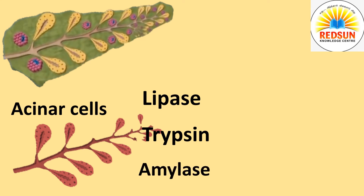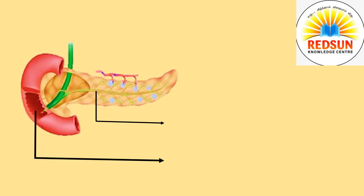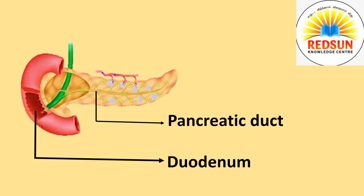Pancreatic amylase digests starch, trypsin digests protein and lipase digests fat. Pancreatic juice also contains two nucleases, which are enzymes that break down nucleic acid molecules into nucleotides. These enzymes enter the duodenum via pancreatic duct.